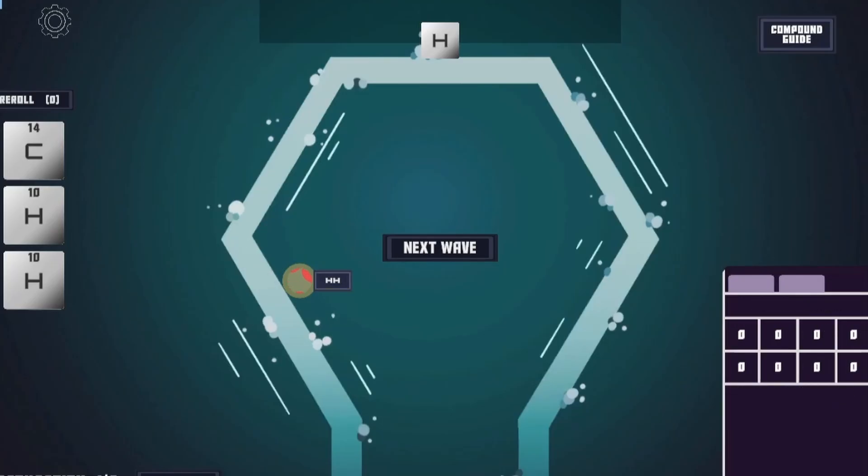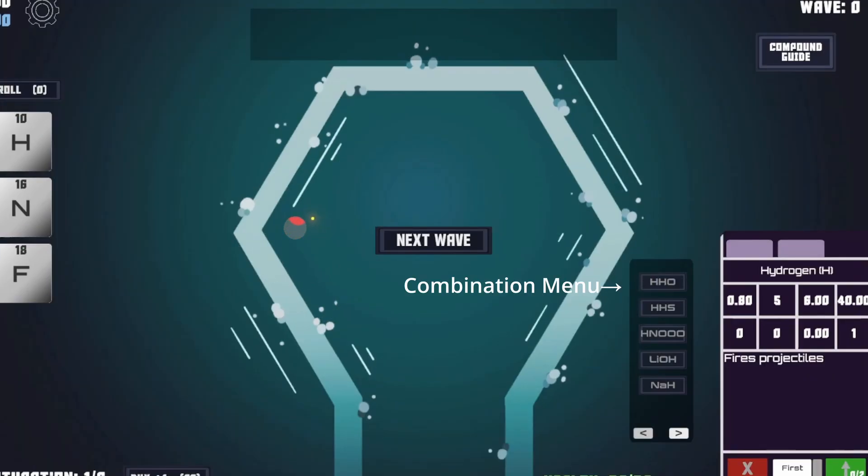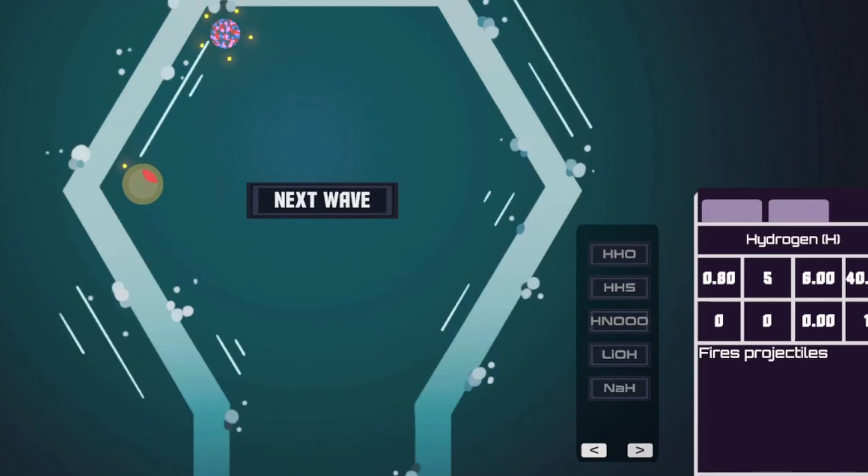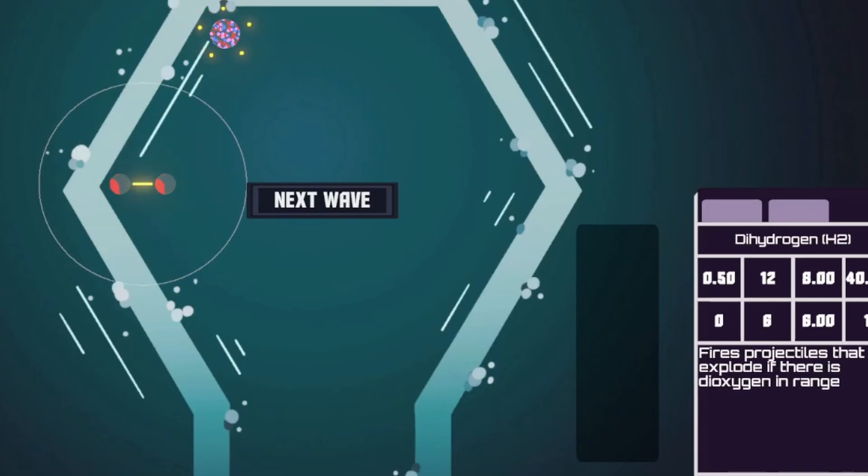Another feature I wasn't too happy with was the atom combination buttons next to the atoms. They sometimes got in the way of things. I added a separate atom combination menu, and now you can see all possible combinations with that element, and the available combinations will be listed at the top.